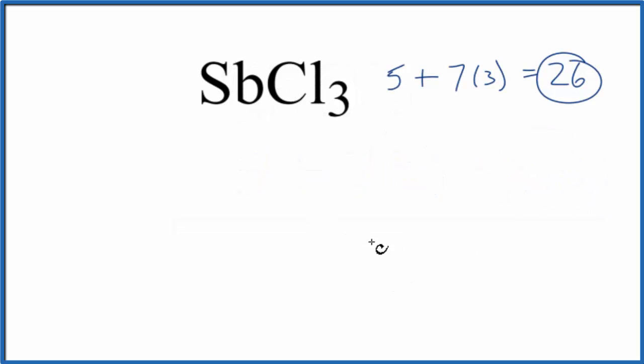We'll put the least electronegative element in the center of our Lewis structure. That's the antimony, the Sb there. And then we'll put 3 chlorine atoms around it.